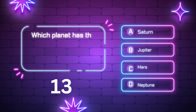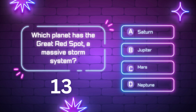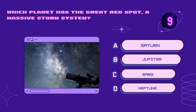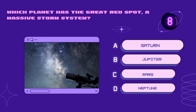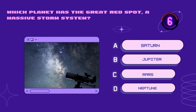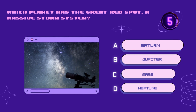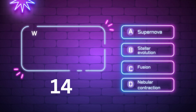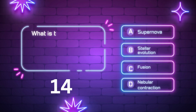Which planet has the Great Red Spot, a massive storm system? Saturn, Mars, Jupiter, Neptune. Your time starts now. Right answer is Jupiter.